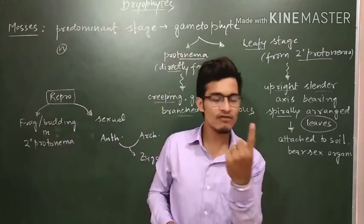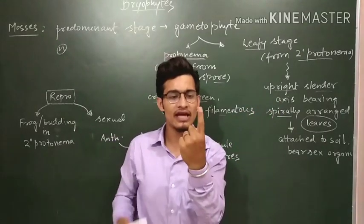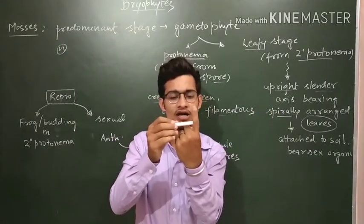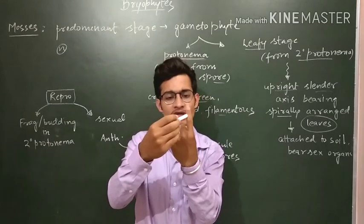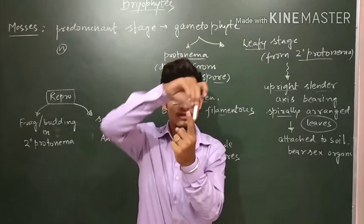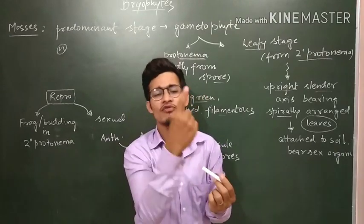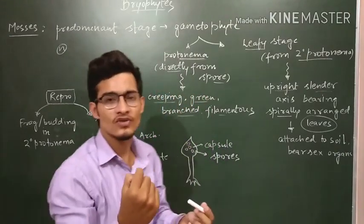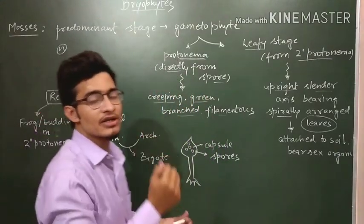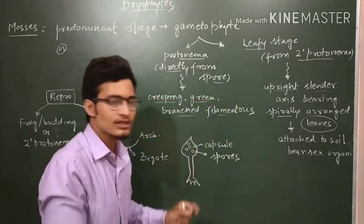The spirally arranged leaves means that if this is the upright slender axis, one leaf will be here, after that the second one will be here, third one here, fourth one here, fifth and sixth. So they form a spiral arrangement on the axis.